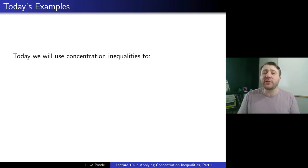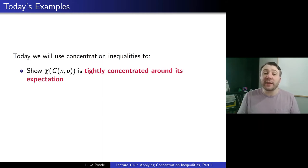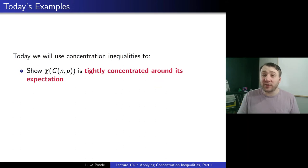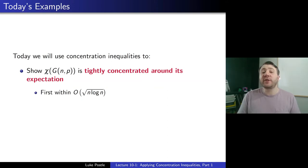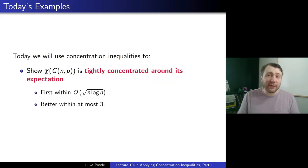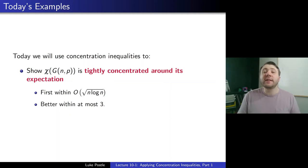Today's big example will be showing that the chromatic number of the Erdős-Rényi random graph G(n,p) — so χ(G(n,p)) — is tightly concentrated around its expectation. We won't derive what the expectation is, but we'll focus on showing that whatever that expectation is, χ is concentrated around it. We'll do this in two parts: first an easier argument showing concentration within O(√n log n), and then an even better result showing it's within at most 3, so concentrated on at most four values, at least for large p.